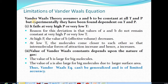As we have already gone through the Van der Waals theory, according to which it was assumed that A and B are constant at all temperatures and pressures. But experimentally it has been found that the values of A and B do not remain constant at all temperatures and pressures — they are dependent on temperature and pressure, especially at very high pressure or very low temperature.